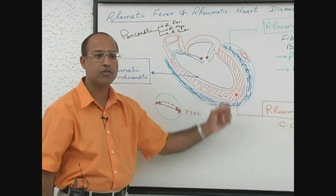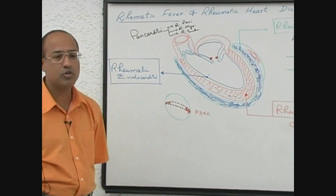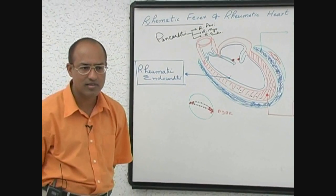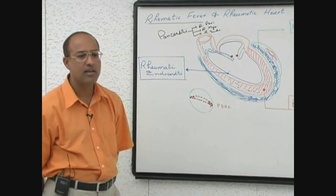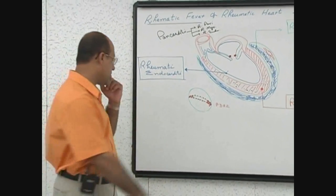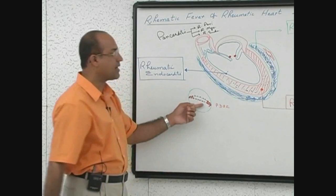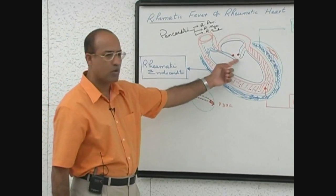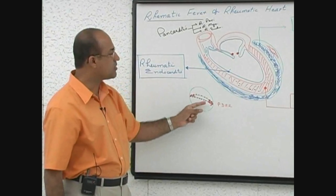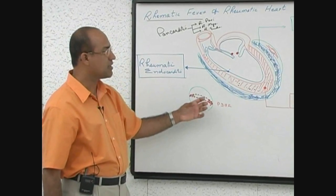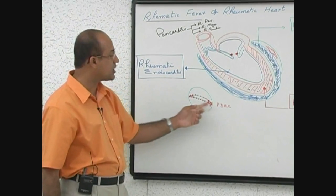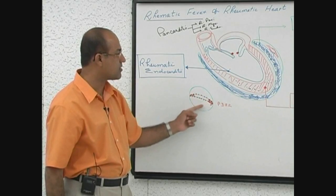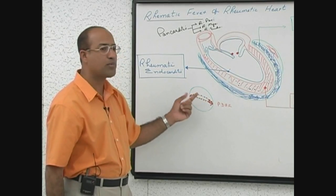The long-term complication develops due to acute endocarditis. During the acute endocarditis, the lesions are rheumatic vegetations formed on the surface of the valves. These vegetations heal by a fibrotic process, adhesion of the leaflets occurs, and due to that reason the valve becomes distorted.